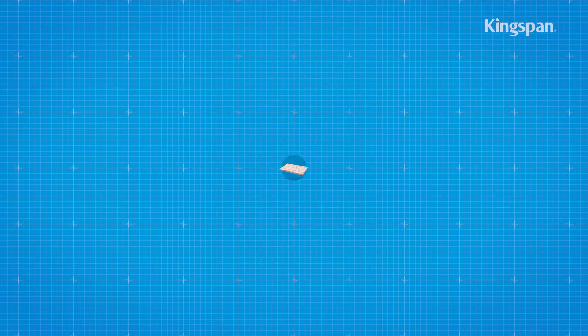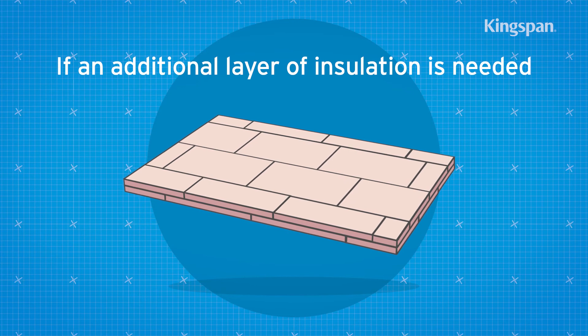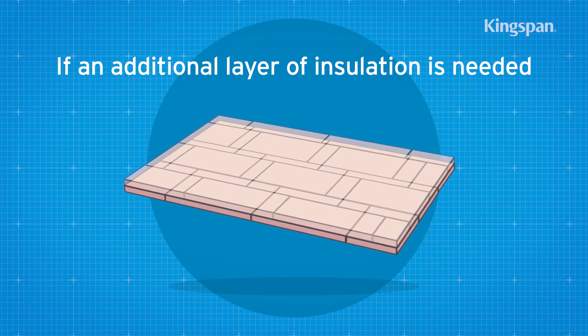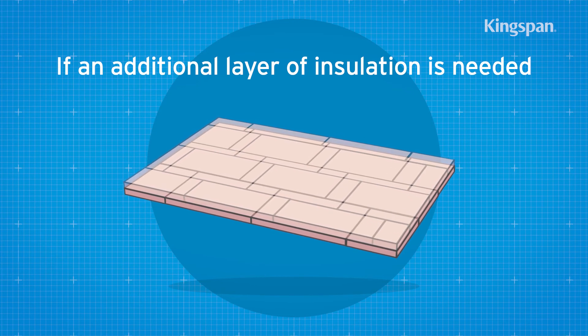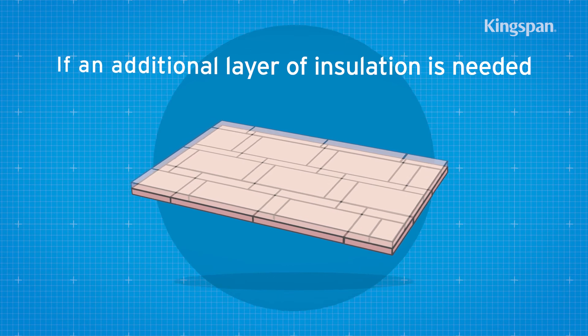If an additional layer of insulation is needed, it should be horizontally offset so that the board joints and the adjacent layers do not coincide with each other.